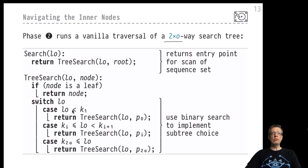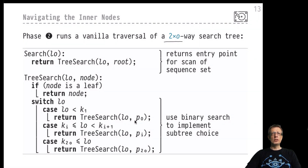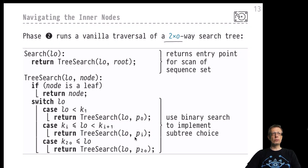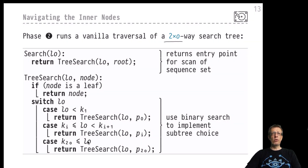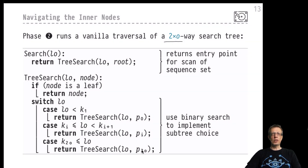If the search value is less than the first separator in the inner node, we follow the pointer to the leftmost subordinate tree pointed to by p0. Otherwise, we continue binary search until we find two separators that bracket our low value, then follow the appropriate pi pointer to the subordinate search tree. If our low value is larger than the largest key stored in the inner node, we follow the pointer to the rightmost subordinate search tree. This is simply a vanilla tree search in an ordered search tree.